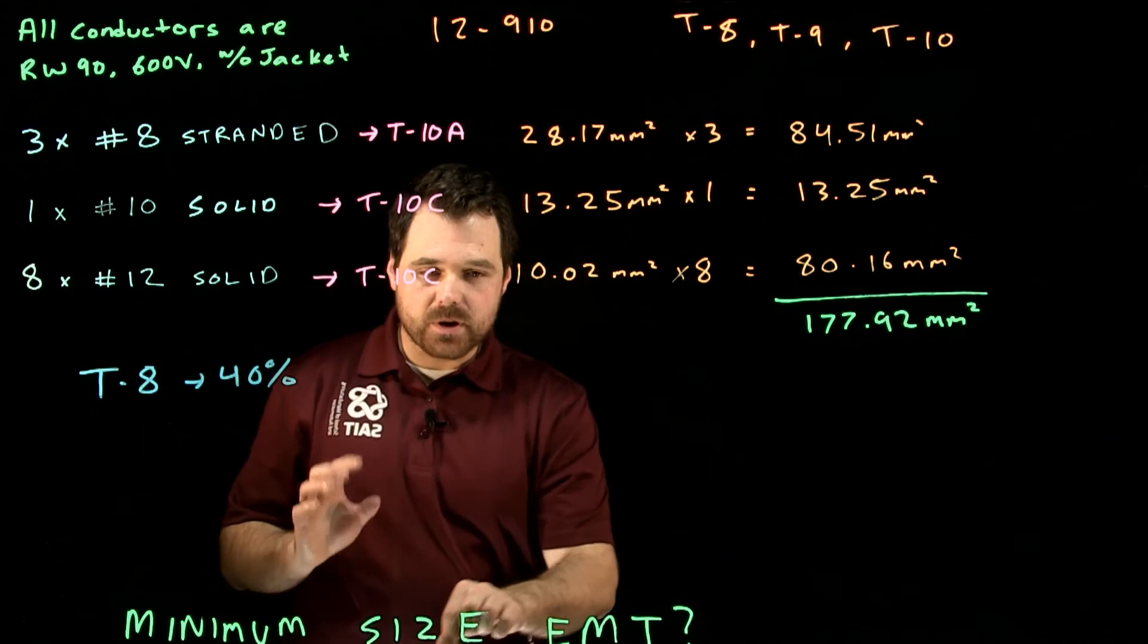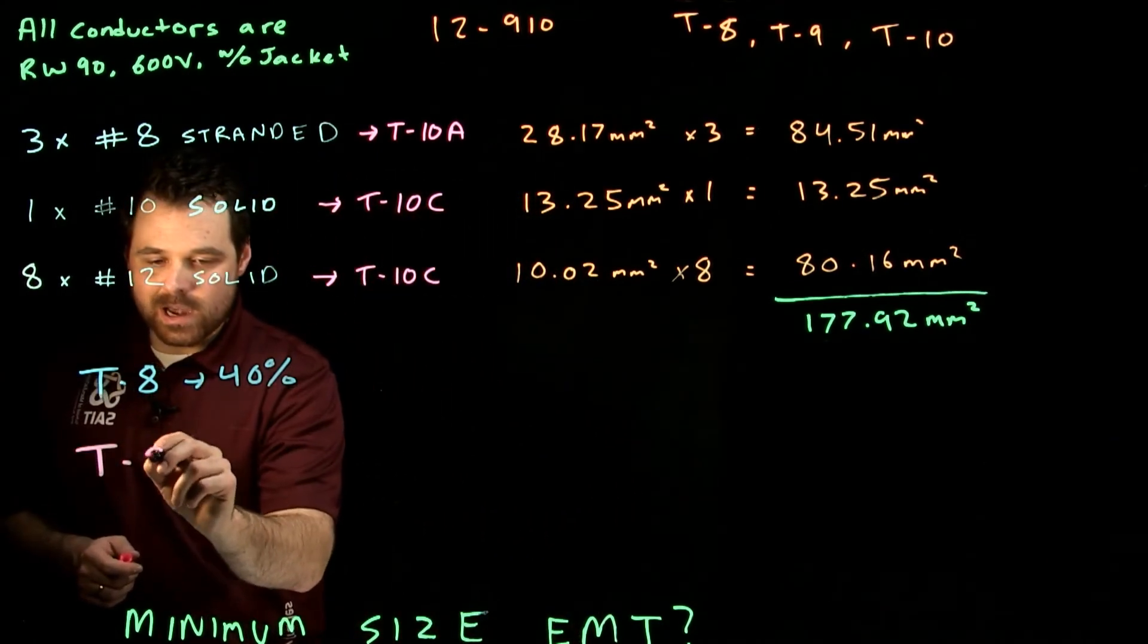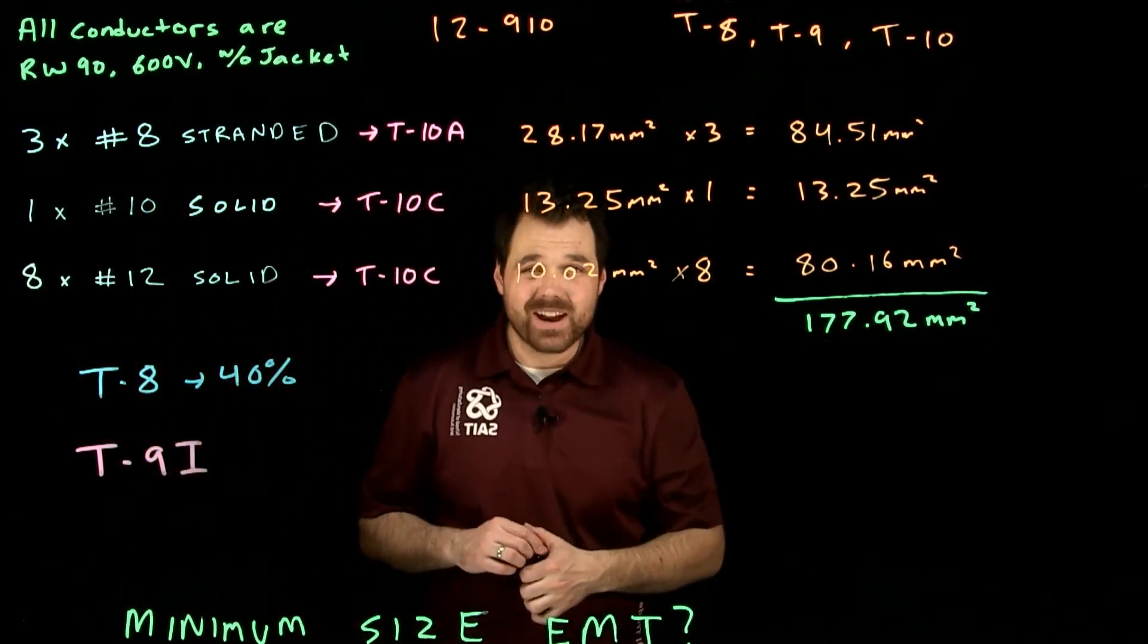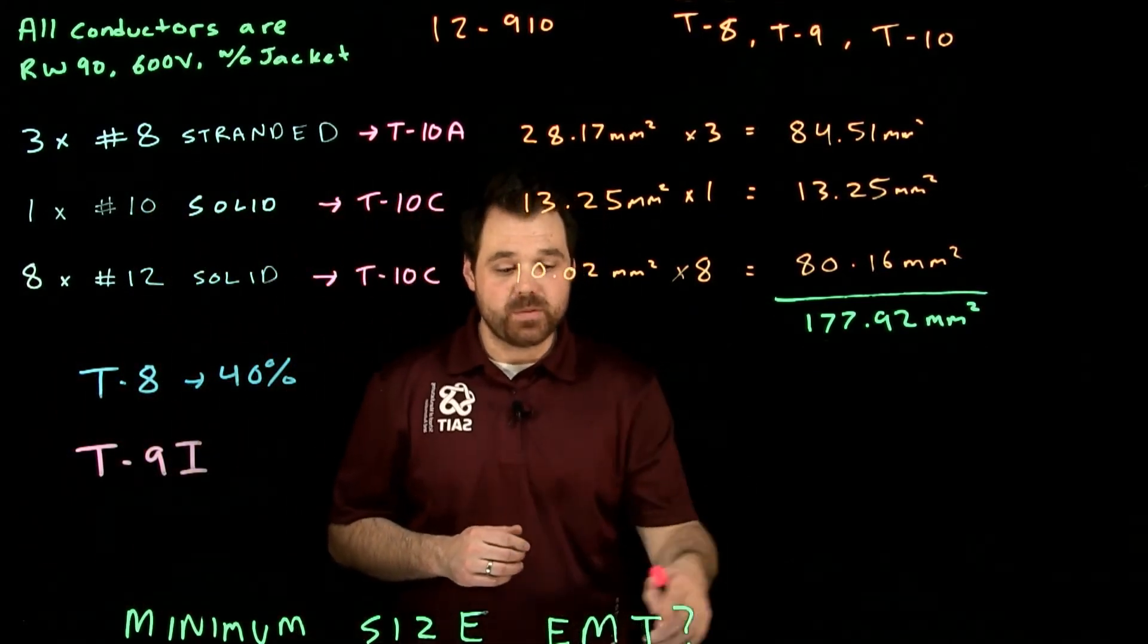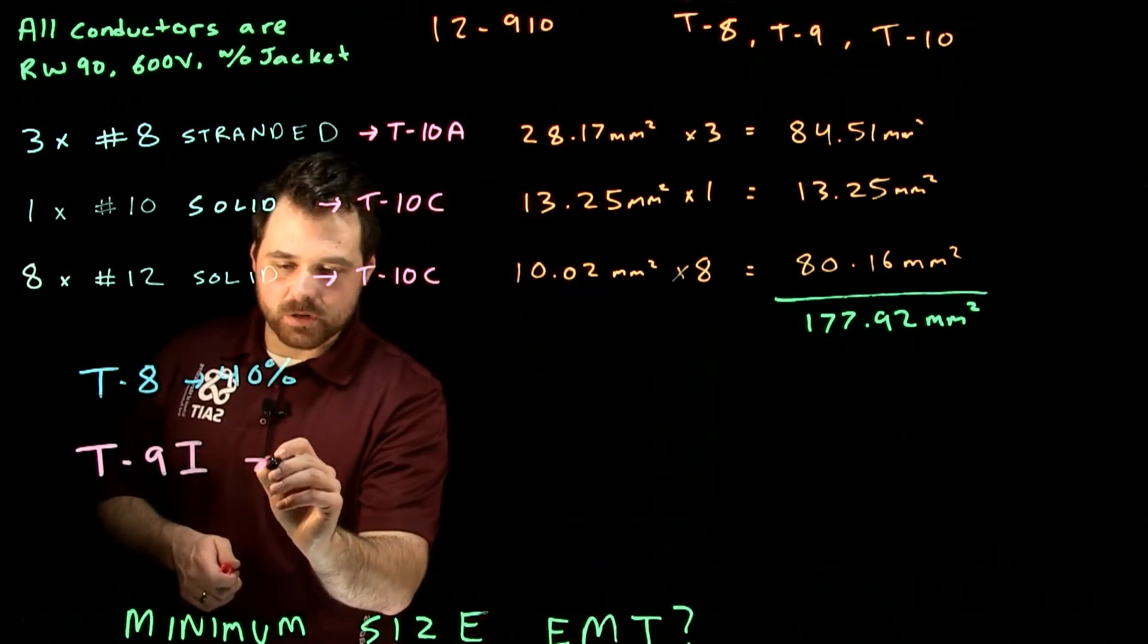Now our next step and our last step is actually going to be table 9-I. Table 9-I is for electrical metallic tubing or EMT. What we do is we go to the 40% column.